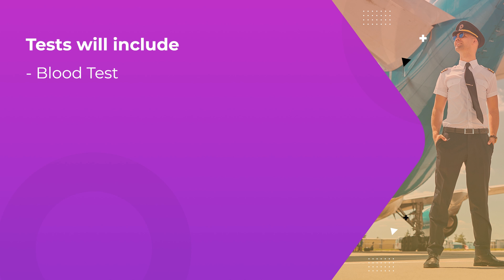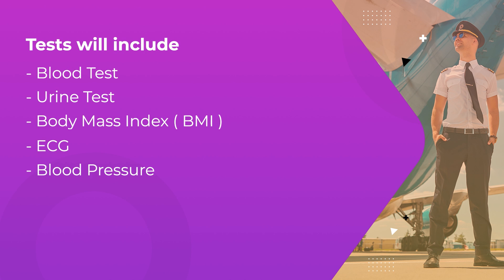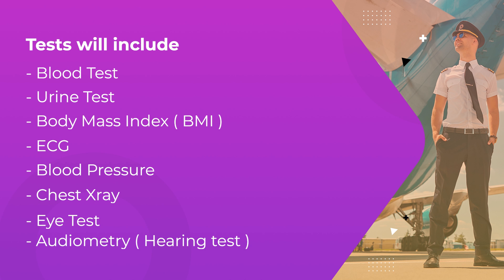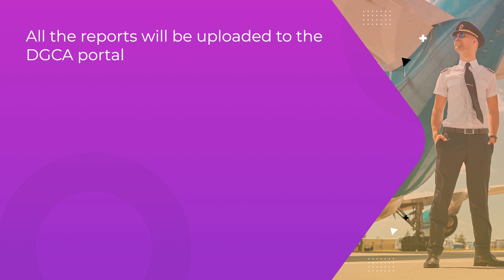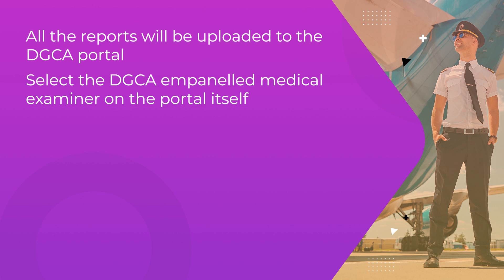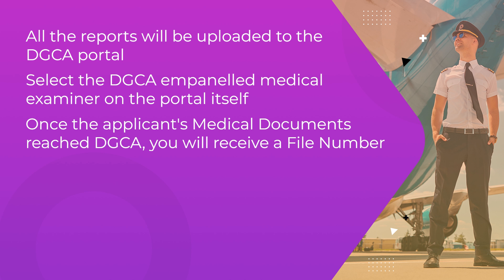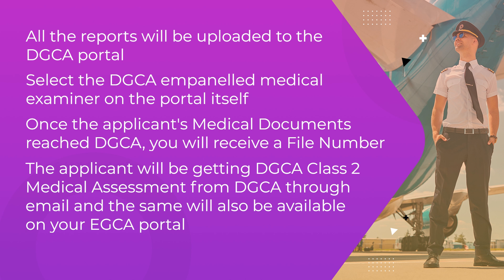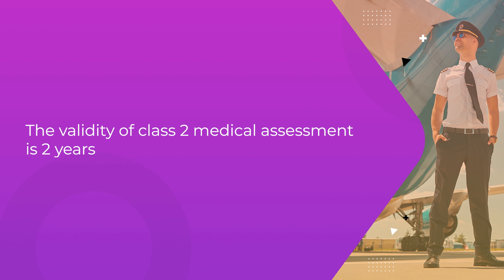Your tests will include blood, urine, BMI, ECG, blood pressure, chest x-ray, eye test, hearing test, etc. The applicant needs to upload these test documents on the EGCA portal and select the DGCA empaneled examiners for the medical on the portal itself. Once the applicant's medical documents reach DGCA, a file will be prepared and you will receive a file number. You will receive your DGCA class two medical assessment from DGCA through email, and it will also be available on the EGCA portal. Class two medical assessment validity is two years.